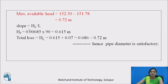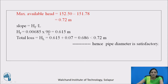Check that frictional head loss plus minor head loss is less than 0.72 m. Frictional head loss = slope × length of siphon = 0.00685 × 90 = 0.615 m. Total head loss = frictional head loss + minor losses = 0.615 + 0.07 = 0.685 m, which is less than the available head of 0.72 m. Hence, the 300 mm diameter pipe is satisfactory for Barrel 1.